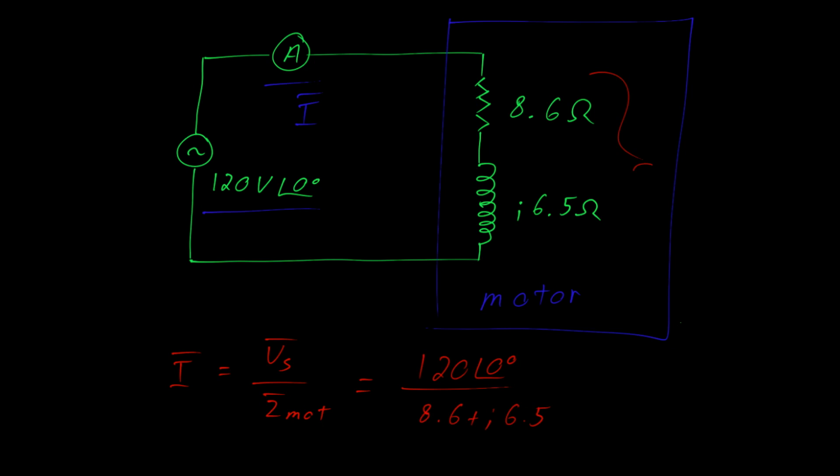Since this is a series circuit, the total impedance is the sum of the individual impedances.